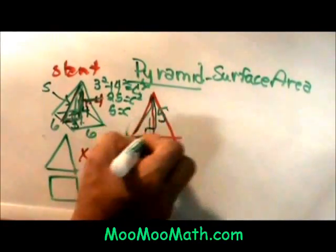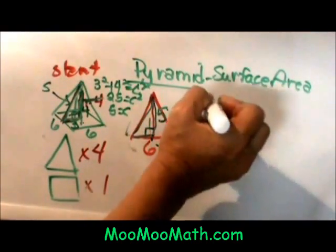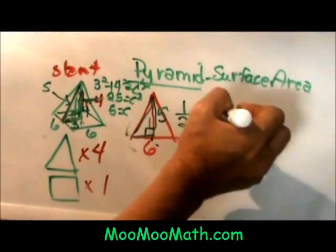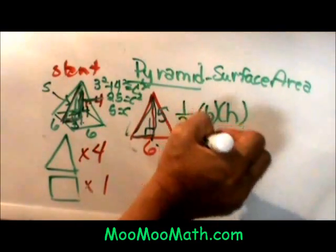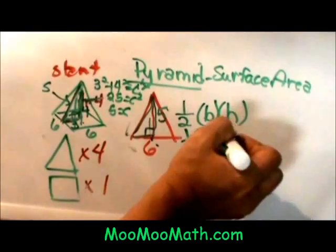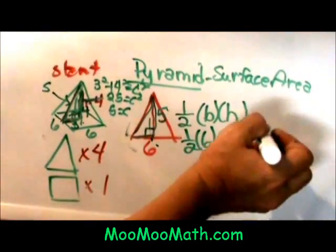Now I am going to find the area of this triangle. The area of the triangle is one half the base times the height. Well our base is six and our height is five. So one half of six times five, that is thirty and half of thirty is fifteen.